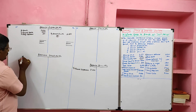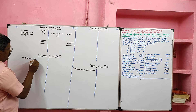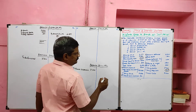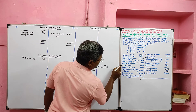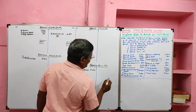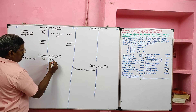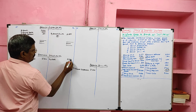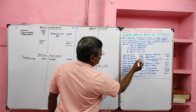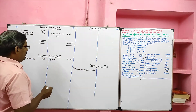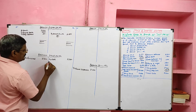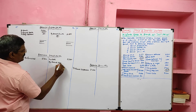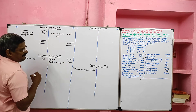Opening debtors are recorded on the debit side of the Debtor Account as 'To Balance b/d.' Opening debtor value: 37,800. Cash received from debtors: 85,500. Then the allowance, bad debts, and discount allowed — these should be written on the credit side of the Branch Debtor Account as 'By Branch Expenses,' value 6,600.